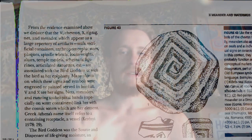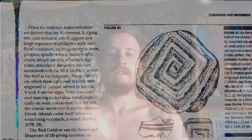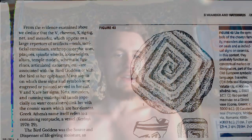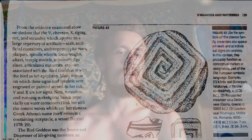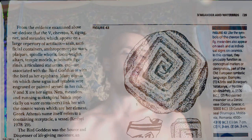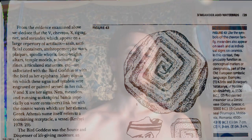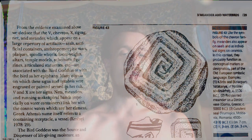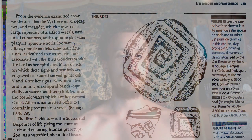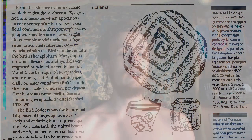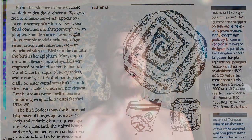From the evidence examined, we deduce that the V, chevron, X, zigzag, net, and meander — which appear on a large repertory of artifacts including seals, sacrificial containers, anthropomorphic vases, plaques, spindle whorls, loom weights, altars, temple models, and schematic figurines — are associated with the bird goddess or with the bird as her epiphany. Many objects on which these signs and symbols were engraved or painted served in her cult. V and X are her signs. Nets, meanders, and running snake spiral bands, especially on water containers, link her with the cosmic waters which are her element.